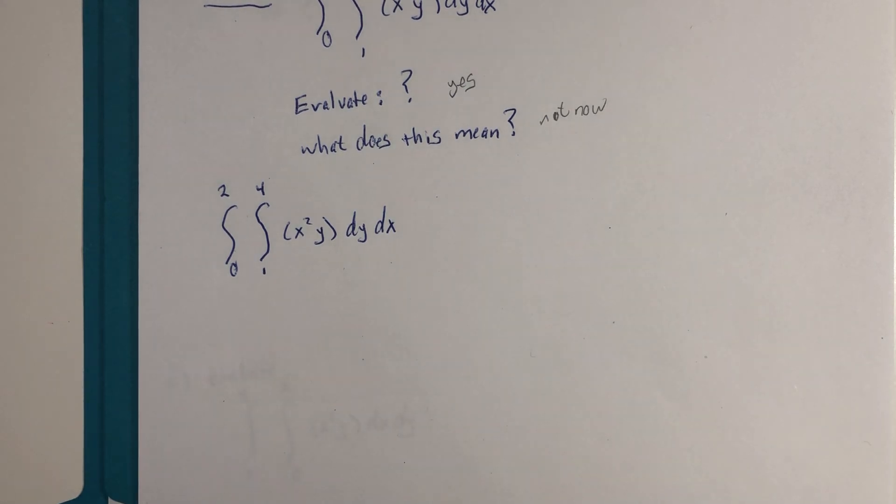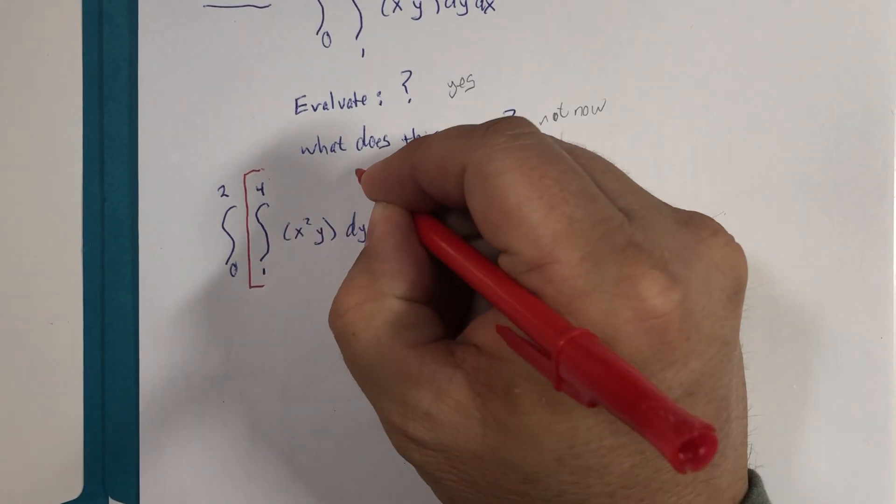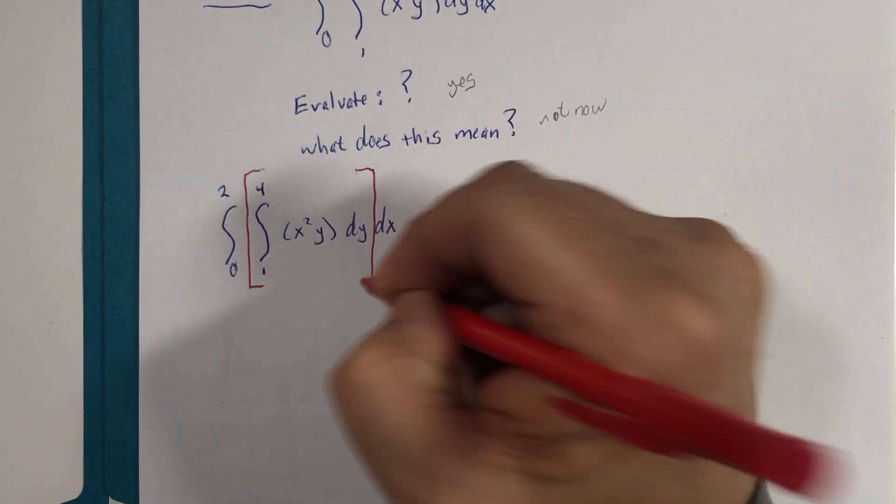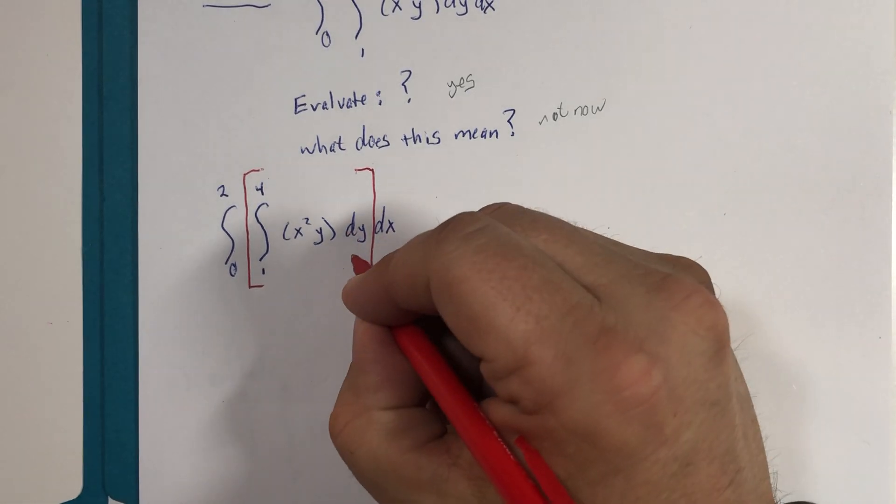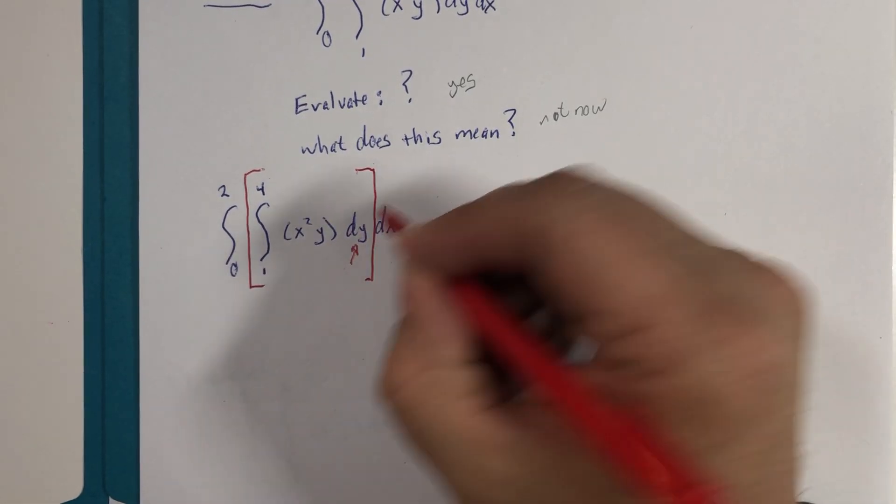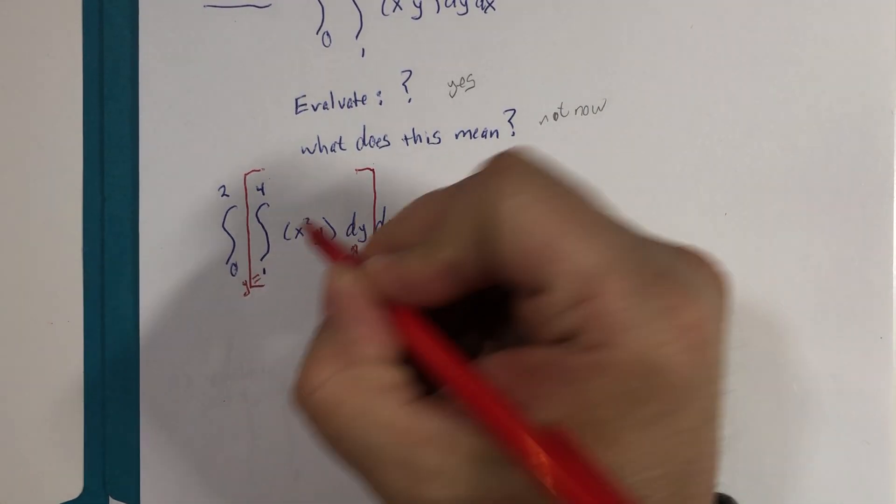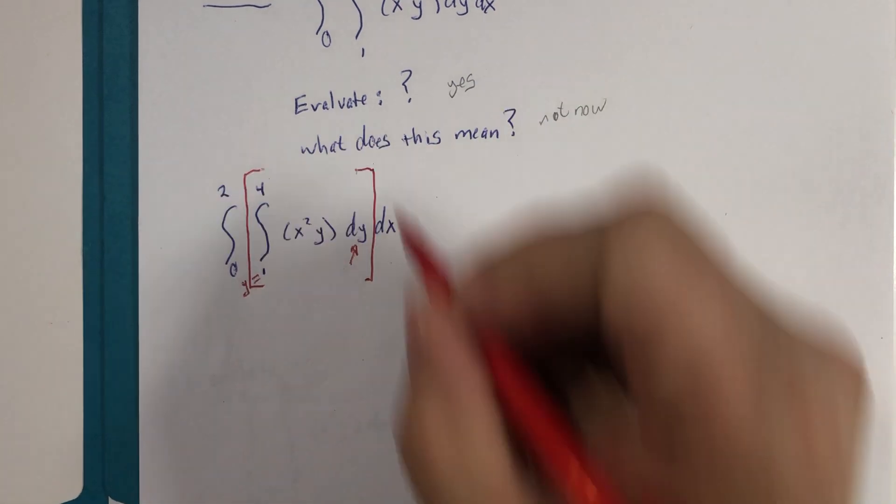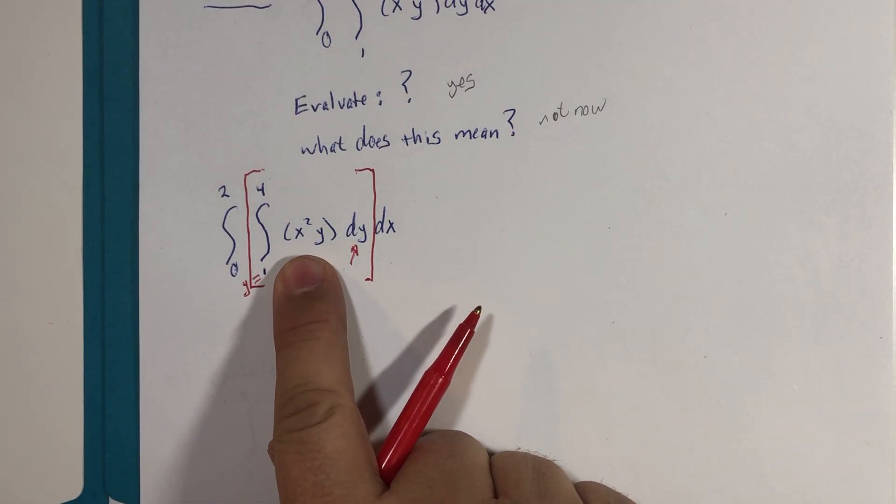First thing you need to know is that there's an implied order of operations or grouping symbol here. And it could be written or drawn in like this. This tells us what the variable is. And that means these boundaries are y equal boundaries, y equals one to y equals four.